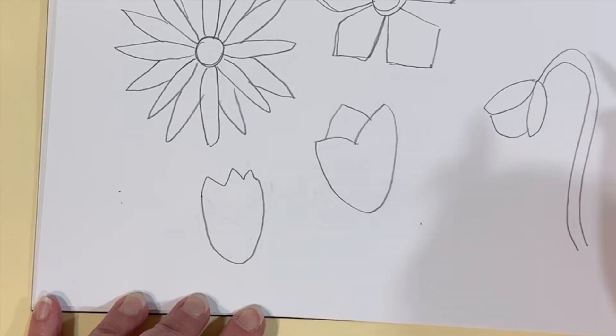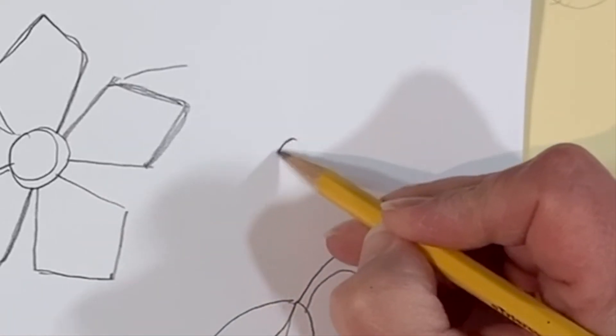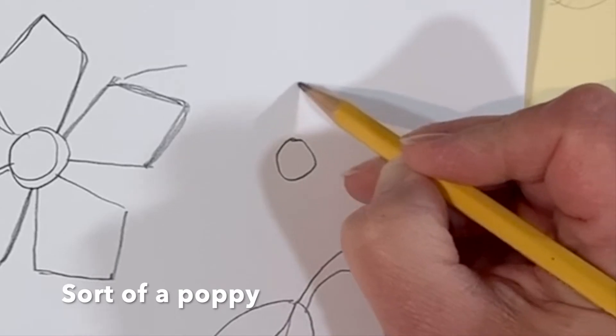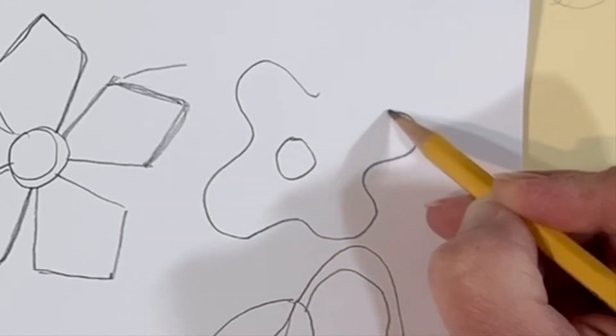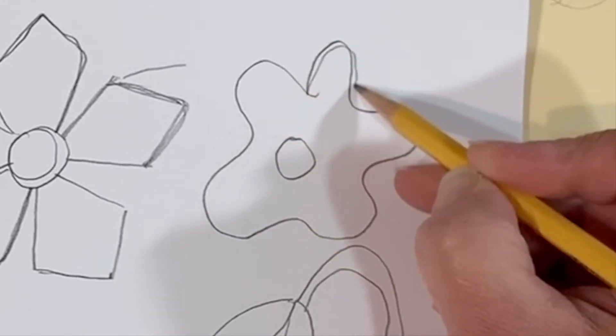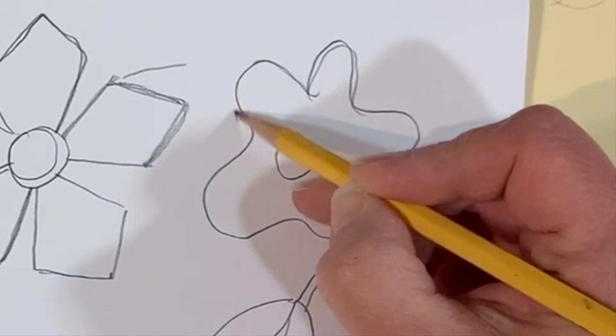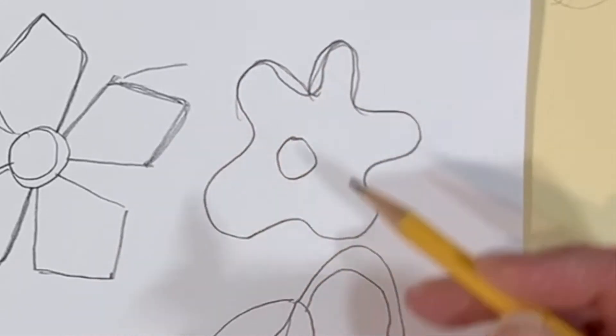This next flower isn't very realistic. It's sort of like a poppy. I start with a circle in the middle and then I make sort of an organic shape around it with five petals.